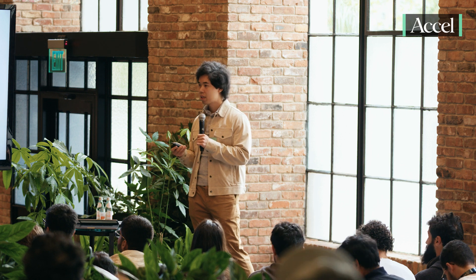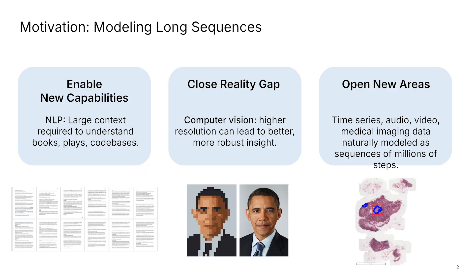In NLP, you want to have new capabilities like reasoning over books, plays, and code bases. In computer vision, you want to close the reality gap where you want to model really high-resolution images to give more robust insights. And usually if you use something like vision transformer, high-res images translate to long sequences. It can also open new areas. I have collaborators at Stanford who work on audio modeling, video modeling, medical imaging.